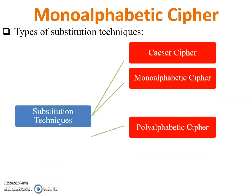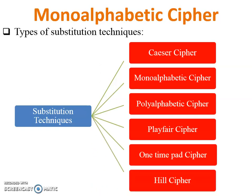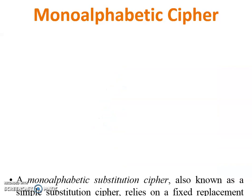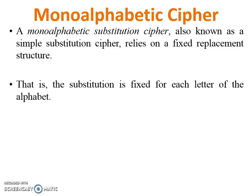Today I am going to teach you mono alphabetic cipher. A mono alphabetic substitution cipher, also known as simple substitution cipher, relies on a fixed replacement structure. It is the easiest technique of cipher in network security, where the substitution is fixed for each letter of the alphabet.